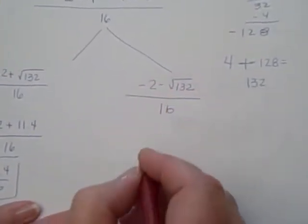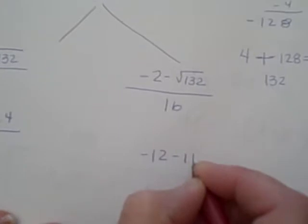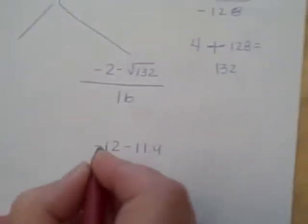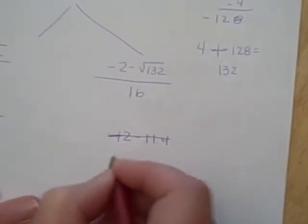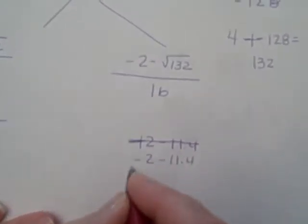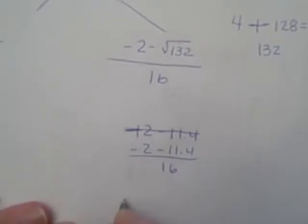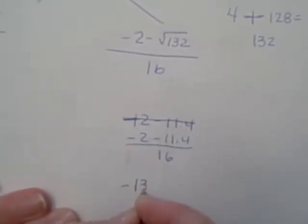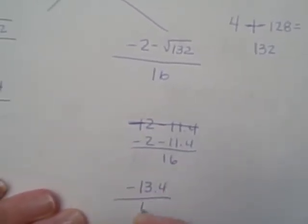Or you can do negative 2 minus 11.4, all over 16. And so that's going to be negative 13.4 over 16.